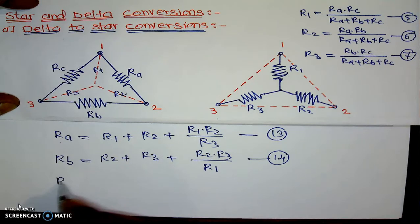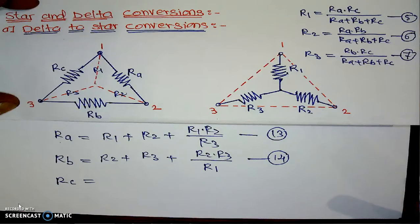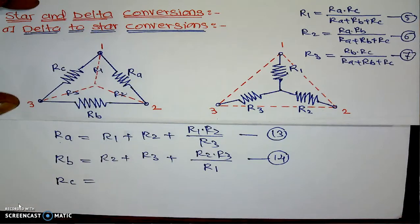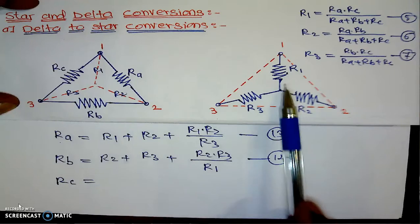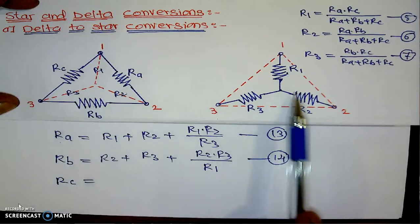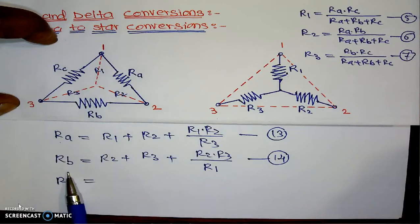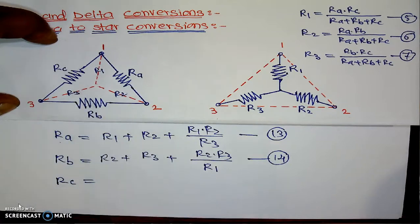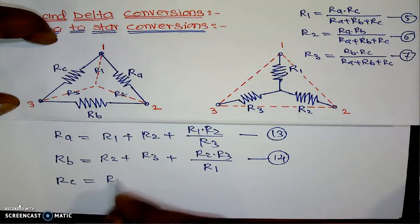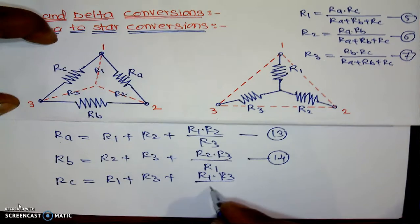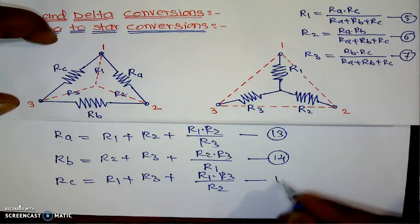And finally, we can write the equation for Rc. Rc is connected between R1 and R3 in the delta network. Its value is R1 plus R3 plus R1 into R3 divided by the remaining resistance R2. This is equation number 15.